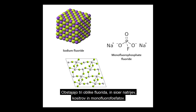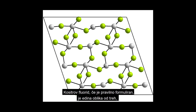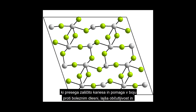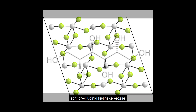There are three types of fluoride: sodium, tin, and monofluorophosphate. Tin fluoride, if correctly formulated, is the only type out of the three that surpasses cavity protection and helps fight against gum diseases, sensitivity, and protects from the effects of acid erosion.